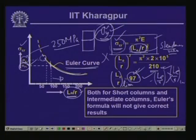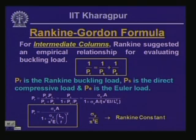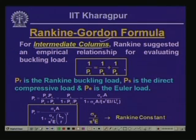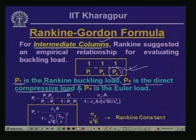For both short and intermediate columns, Euler's formula is not applicable. Rankine proposed an empirical relationship, commonly called the Rankine-Gordon formula, applicable for intermediate columns: 1/P_R = 1/P_S + 1/P_E, where P_R is Rankine's buckling load, P_S = sigma_y × A is the direct compressive load, and P_E is Euler's critical buckling load.